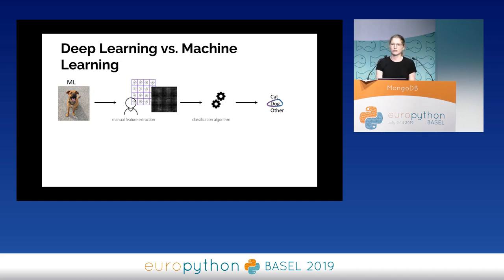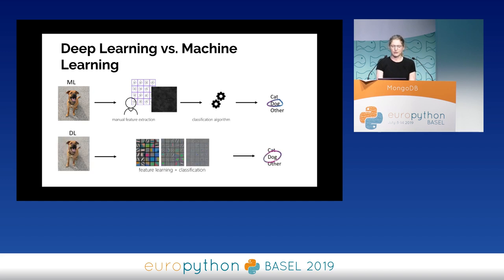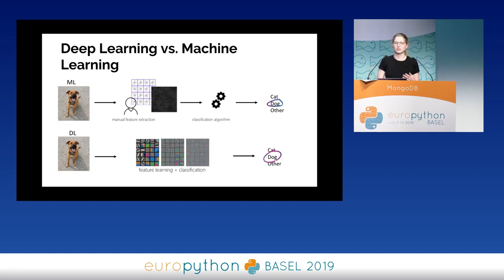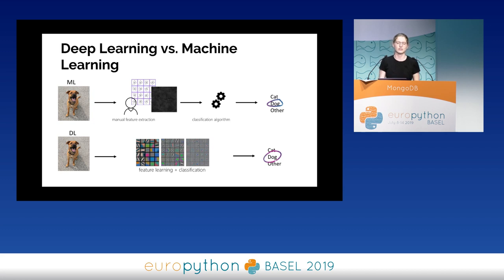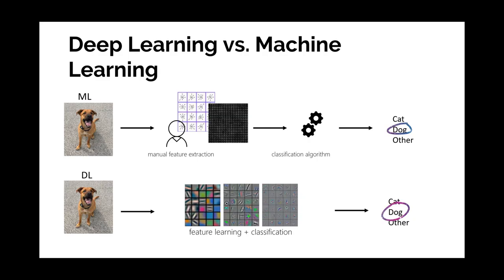With traditional ML you also need to run through different classification algorithms to find which gets the highest accuracy. Deep learning takes a layered approach, trying to understand different features pixel by pixel. The machine does the heavy lifting rather than manual data science work tuning the features. Deep learning does require a ton of data, but once you have it, it becomes a lot easier for the machine to understand the dataset and generate predictions.